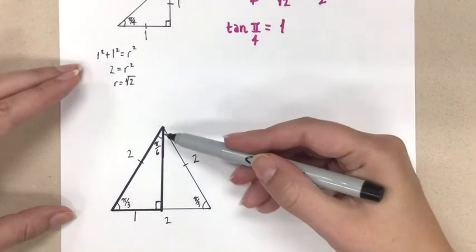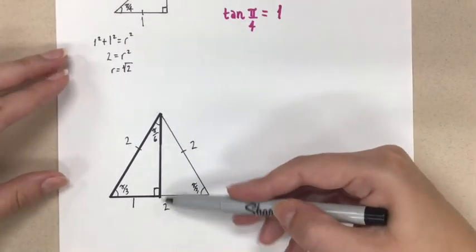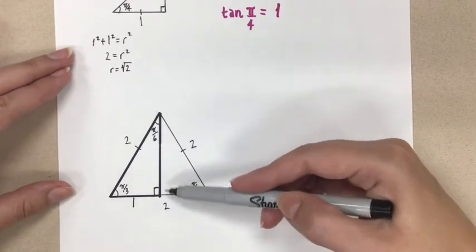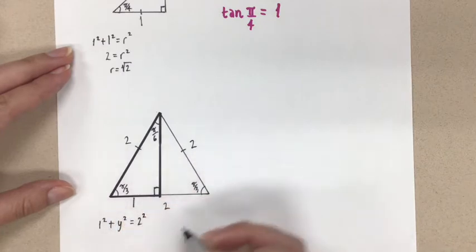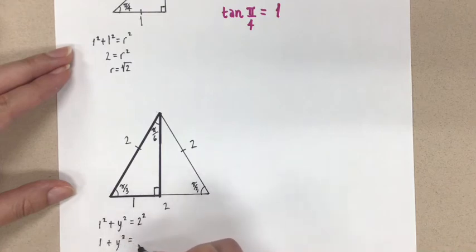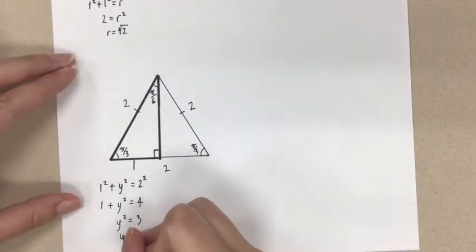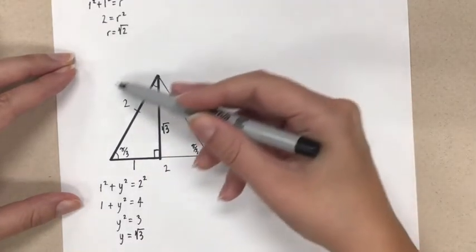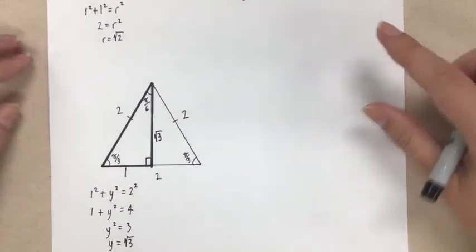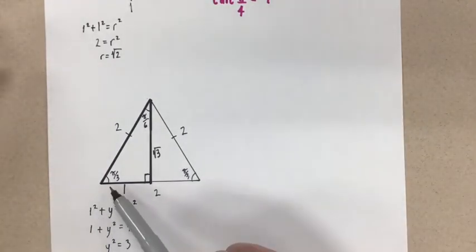We're almost done now — this side length is missing. So we're going to use the Pythagorean theorem again to get this missing side length. Let's call that side length y. So we would have 1 squared plus y squared equals 2 squared. Simplifying: 1 plus y squared equals 4. Isolating y: y squared equals 3, and this means y equals root 3. We want to leave it exactly like that. There is our second special triangle, and now we can use this to get all of our trig ratios for the angles pi over 6 and pi over 3.